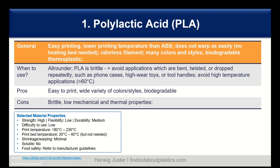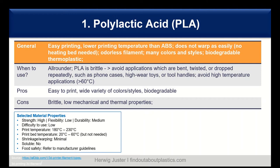The second material of the Big 6 is acrylonitrile butadiene styrene, or ABS for short. It is the second most popular filament, and ABS is slightly superior to PLA. However, the downside is it is harder to print. ABS has high durability, withstands higher temperatures, needs a higher printing temperature, and has a tendency to warp during cooling. It is always recommended to use a heated bed and a well-ventilated space.